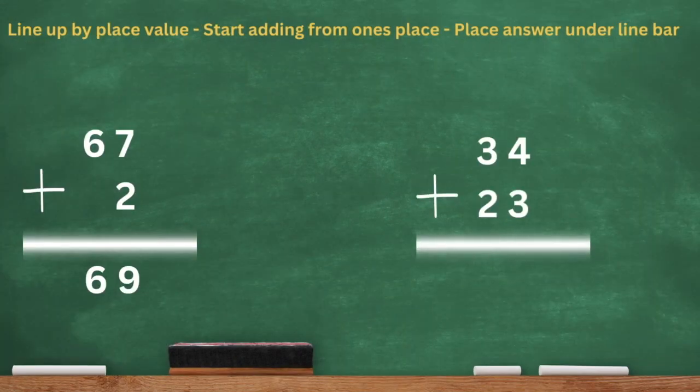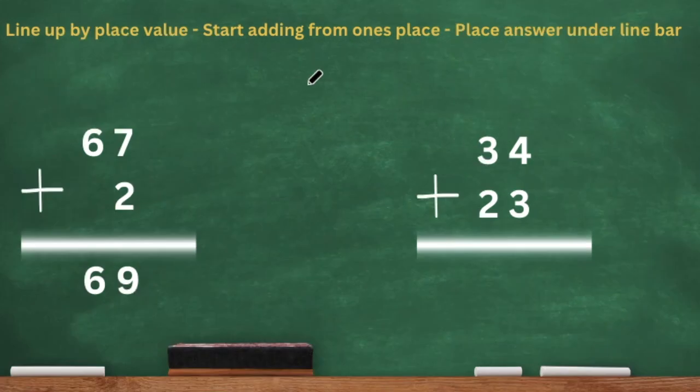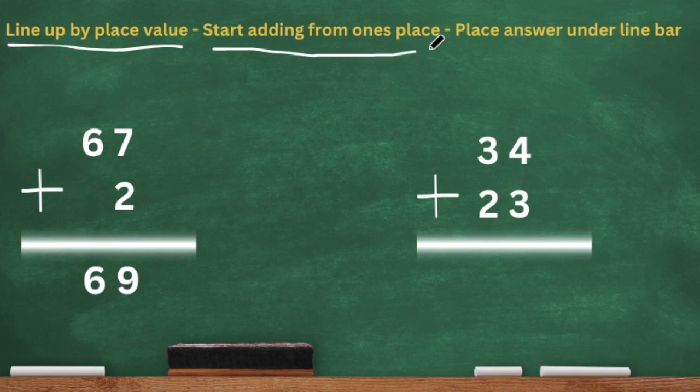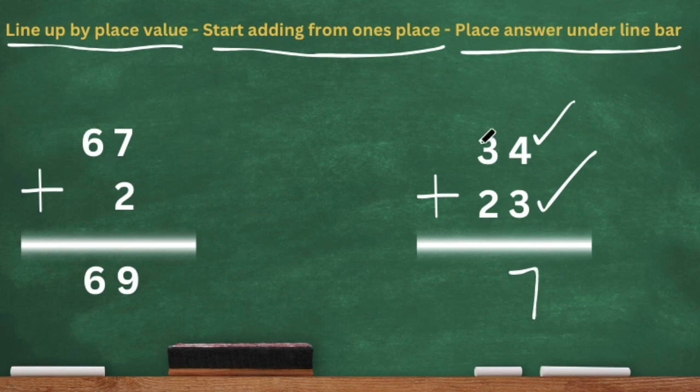That was fun, right? Let's try another one. We have 34 plus 23. Let's not forget our criteria for success at the top of the board: line up by place value, start adding from the ones place, and place your answer under the line bar. In the ones place, four ones plus three ones gives us seven ones. In the tens place, we have three tens plus two tens, which gives us five tens. Our final answer is 57.